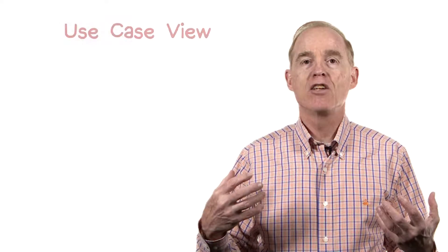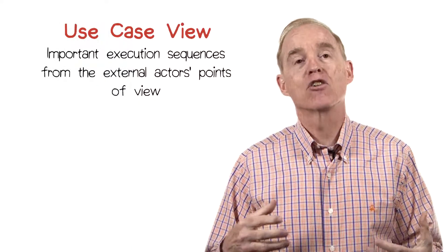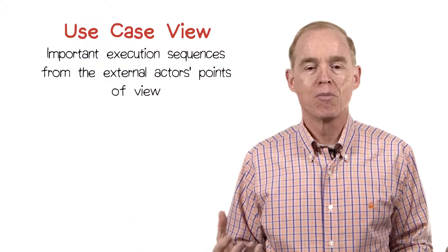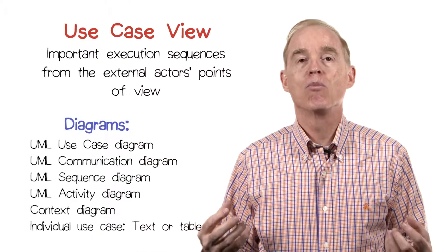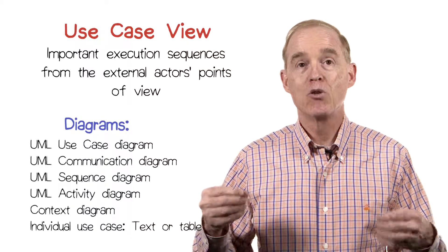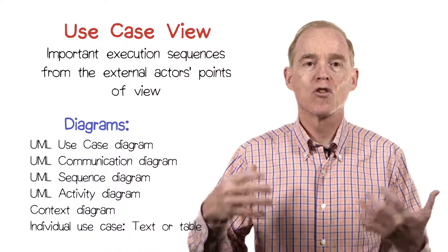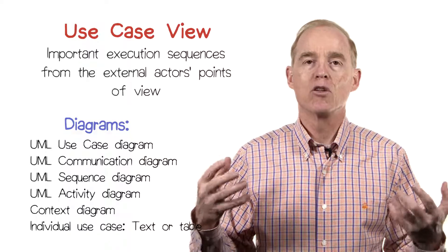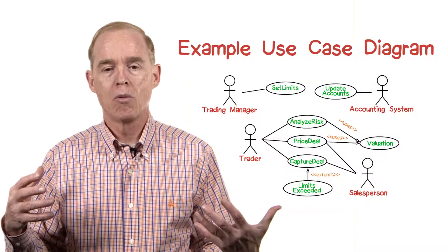The plus one in Kruchten's four plus one is the use case view. Use cases are important execution sequences from the external actors or user's point of view. We'll have a look at the use case diagram that UML offers, some other UML diagrams that can be used to convey individual use cases, and we'll even see some structured text that can convey a use case. Here's a use case diagram from UML.